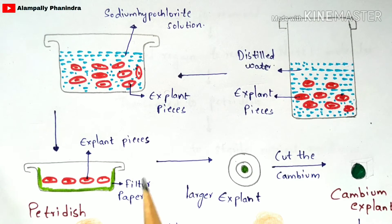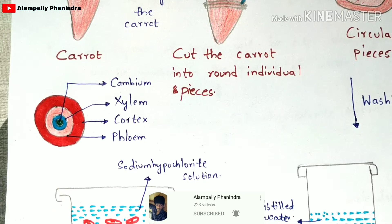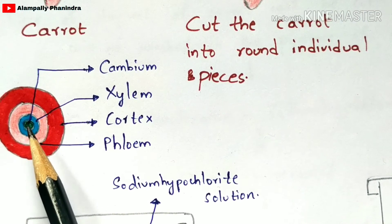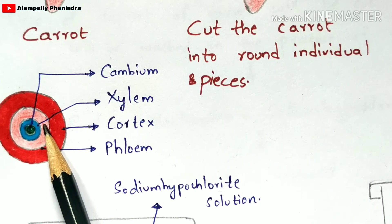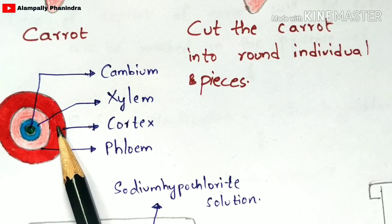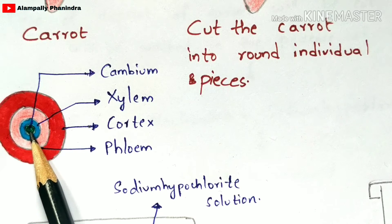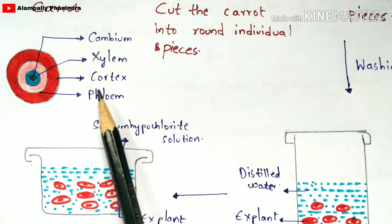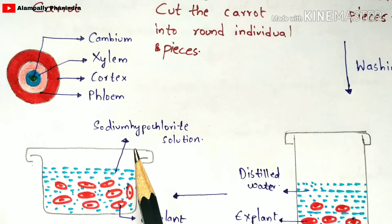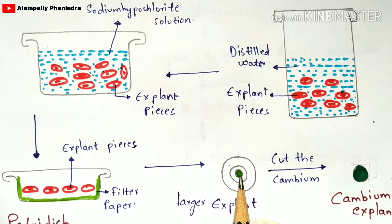Before the next step, you need to understand the structure of the explant. The explant has four regions: the outermost layer is the cortex, the second region is the phloem, the third is the xylem, and the innermost middle part is the cambium. This middle cambium region plays a major role in callus culture.